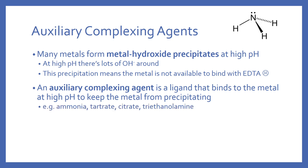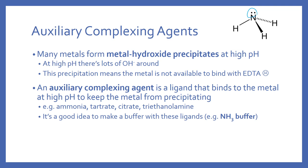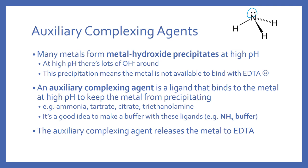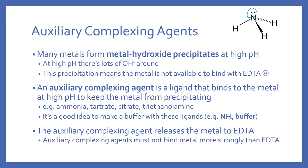Examples of auxiliary complexing agents include ammonia, tartrate, citrate, and triethanolamine — slightly negative weak ligands. With ammonia, the lone pair on nitrogen donates electrons to the metal and coordinates with it. It's a good idea to make your pH buffer using one of these ligands, accomplishing both pH control and keeping the auxiliary agent present. Once you add the EDTA, the auxiliary complexing agent releases the metal to the EDTA. Critically, the auxiliary agent must not bind the metal more strongly than EDTA does — otherwise the metal is never transferred and is still unavailable.